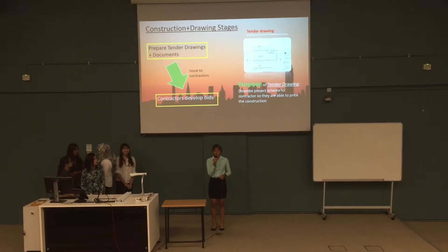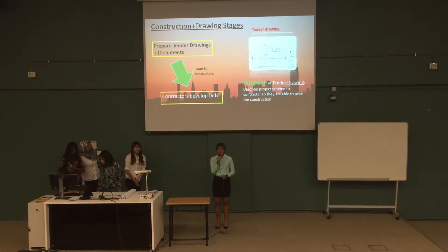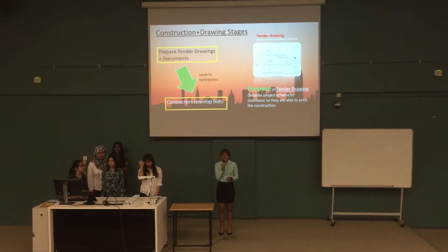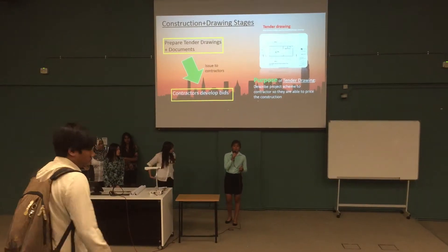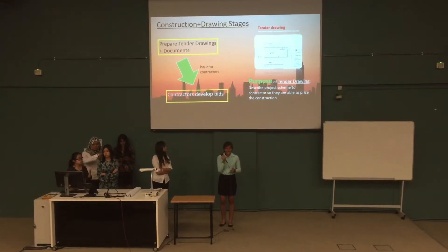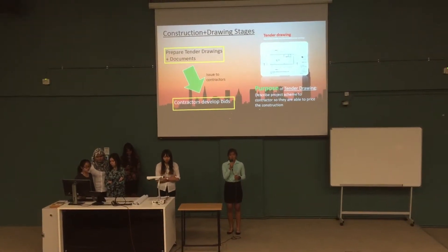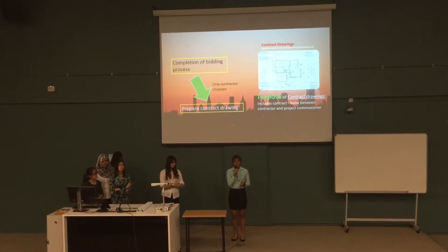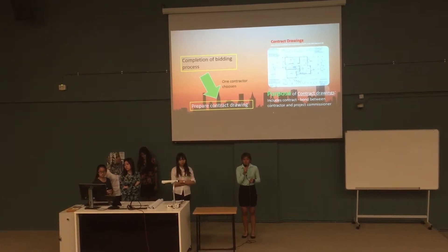So now I will talk about the construction and drawing stages. After a civil engineer gets the architectural drawings from the architect, he or she will start to prepare the tender drawings, which are included in the early building process. Documents including the bill of quantities will be done and issued to the contractor. These drawings and documents describe the project scope so they can price the construction work accordingly. After the completion of tender drawings, the civil engineer will prepare the contract drawings, which include a legal binding contract between the contractor and project commissioner.